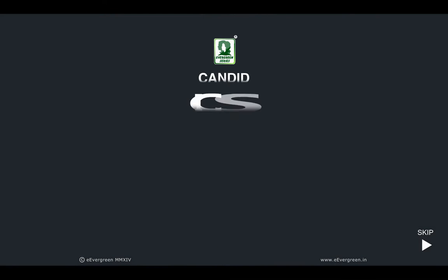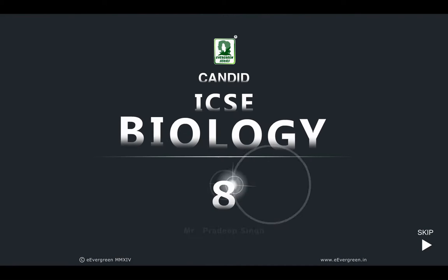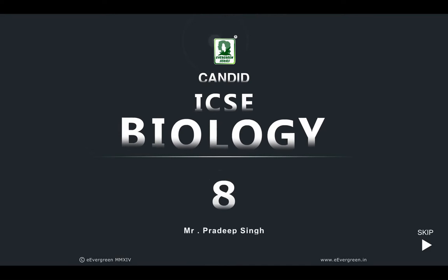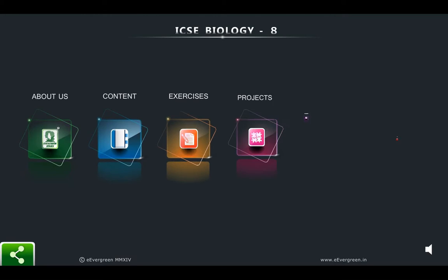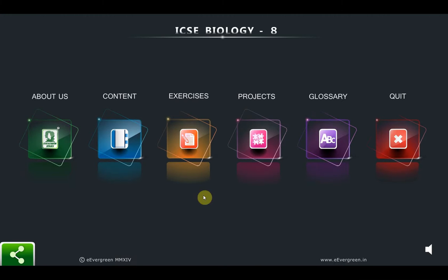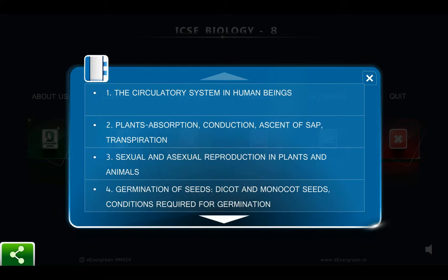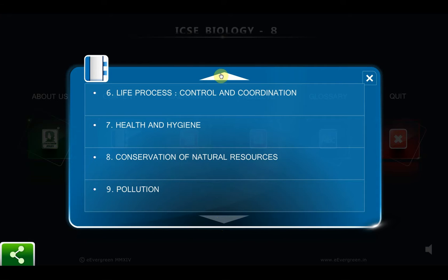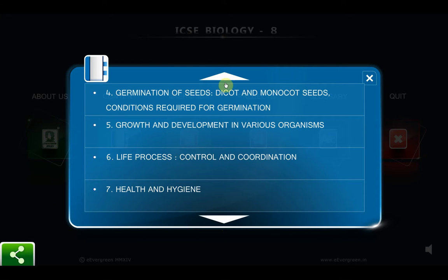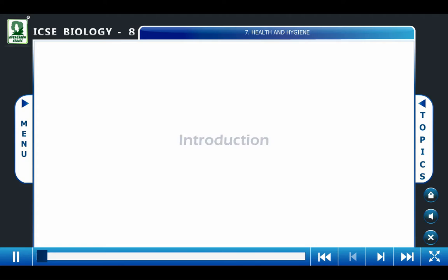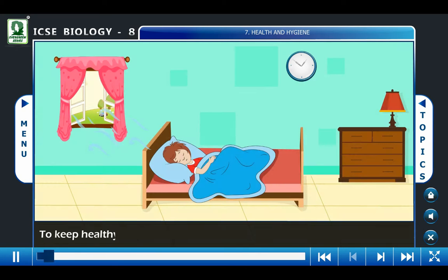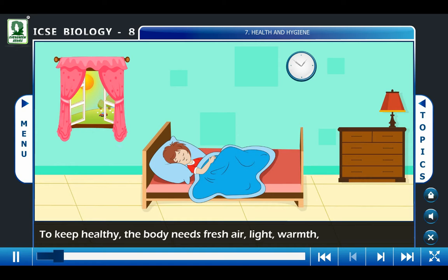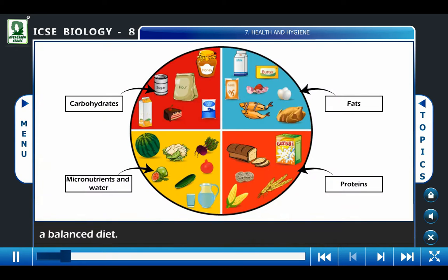CANDID ICSC Biology for Class 8. Introduction: To keep healthy, the body needs fresh air, light, warmth, cleanliness, and a balanced diet.